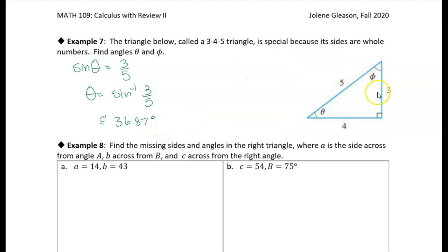Let's try to find the angle phi. The easiest thing to do is recognize that the angles of any triangle have to add to 180 degrees. One of these angles is 90 degrees, so the remaining two have to add up to 90 degrees.